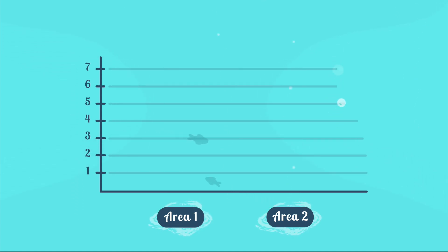This is a bar chart. On the left part of the x-axis, the line going across the bottom, we have area number one and on the right we have area number two. Each hash mark on the y-axis, the line going up and down, represents the average number of fish counted in each area.